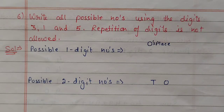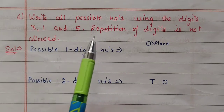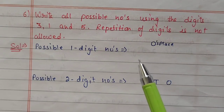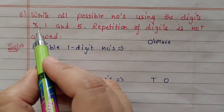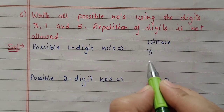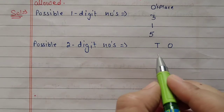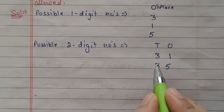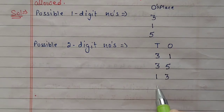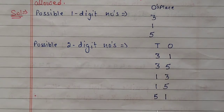Next question number 6: write all possible numbers using digits 3, 1, and 5. Repetition of digits is not allowed. Here they have not mentioned 1-digit, 2-digit, or 3-digit, so all possible conditions we have to check. First, all possible 1-digit numbers: only one place, which can be filled with 3, 1, or 5, giving us 3 numbers. For 2-digit numbers: if tens place is 3, ones can be 1 or 5; if tens place is 1, ones can be 3 or 5; if tens place is 5, ones can be 1 or 3. These are 6 possible 2-digit numbers.